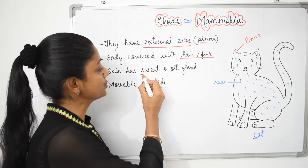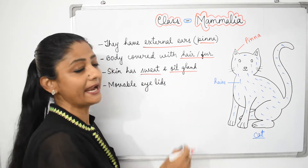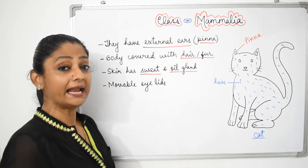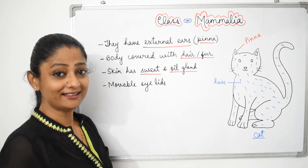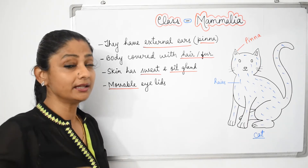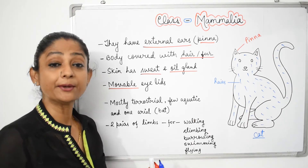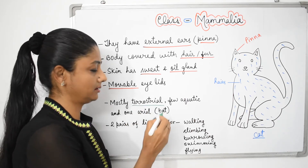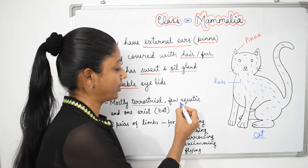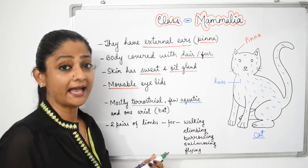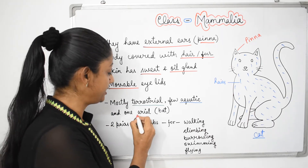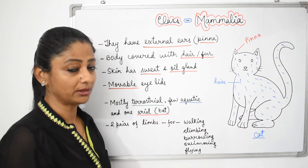In the skin, sweat glands and oil glands are found. Because of these oil glands, our skin remains oily, and because of the sweat glands, we perspire. Eyelids are movable — see, they are movable.